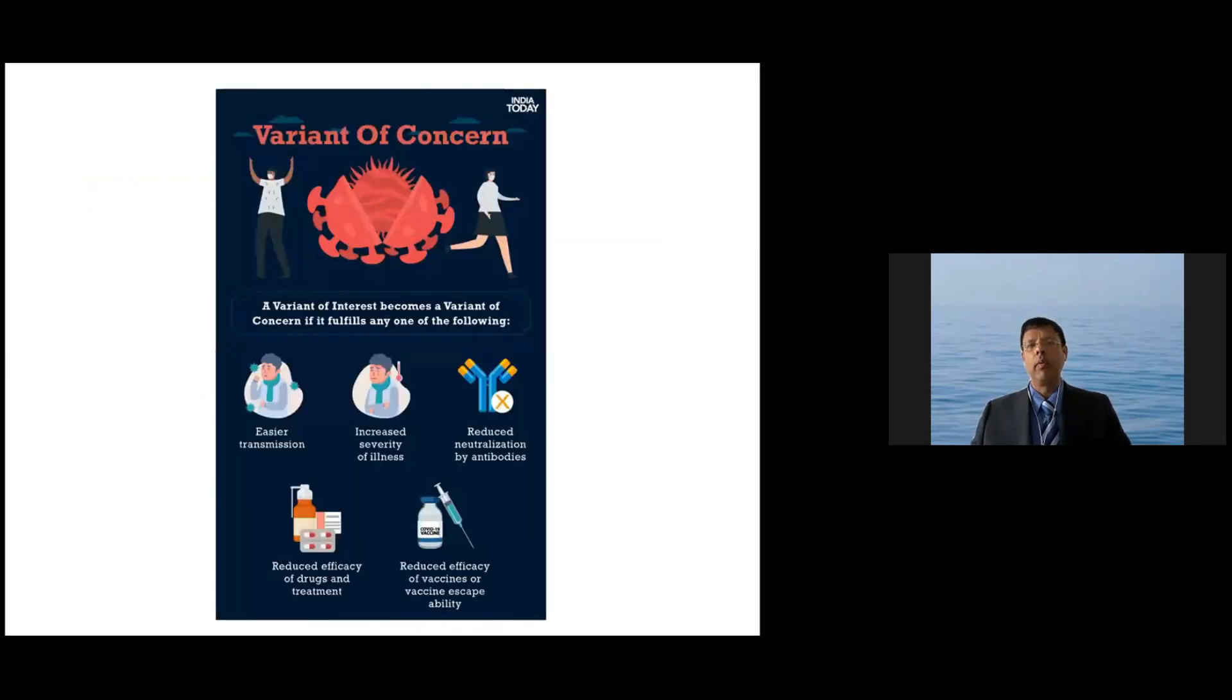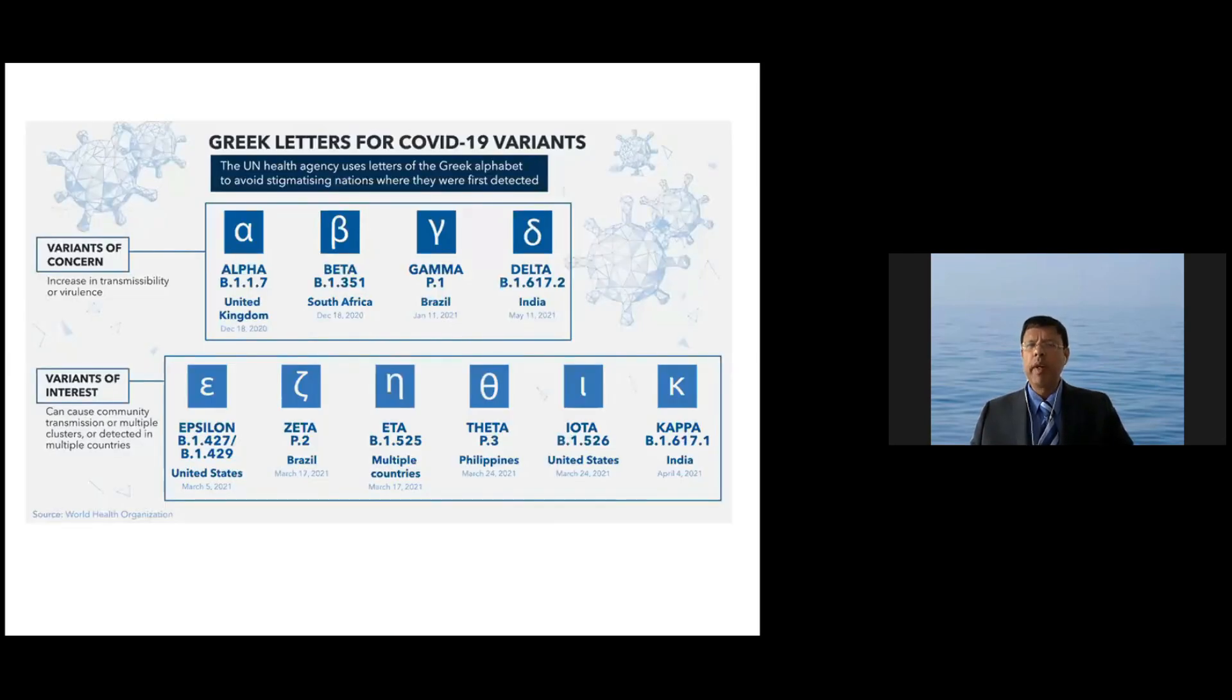So when is it called a variant of concern? If it has an effect on those five different things that I mentioned, initially it's called variant of interest, and then it will be upgraded to variant of concern based on the five characteristics that are assessed. So very recently, the WHO came with a new nomenclature for naming the variants because it was causing a lot of confusion with numbers or the place it originated, like the UK variant.